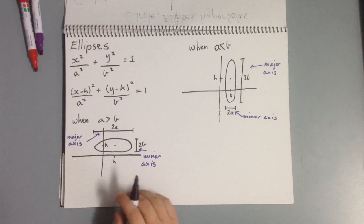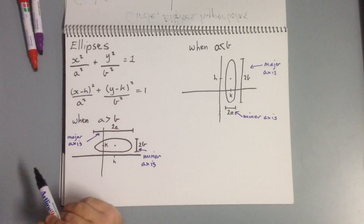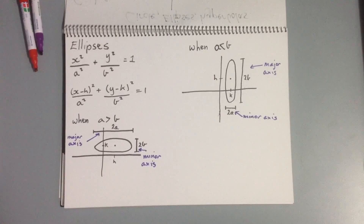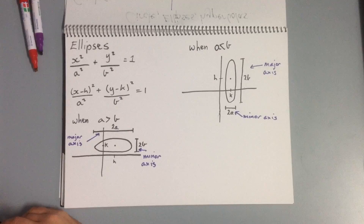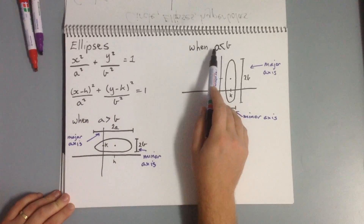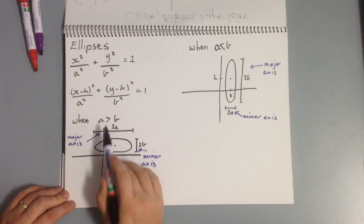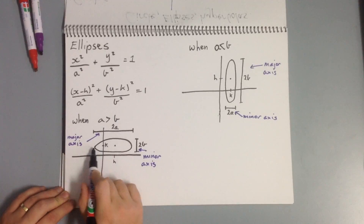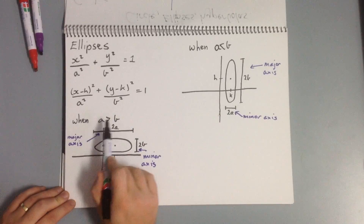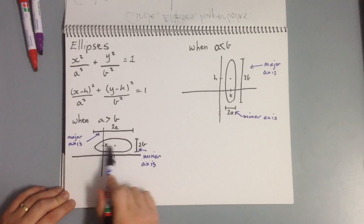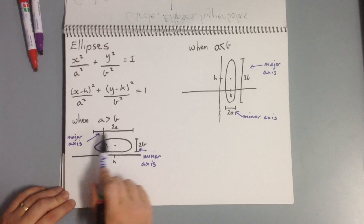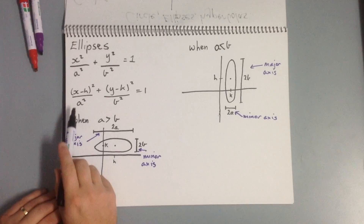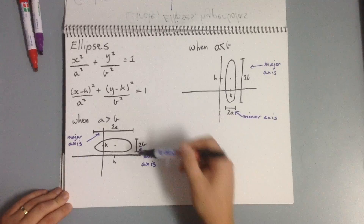When we look at our ellipses, they're a little bit different. We're talking about having x squared over a squared plus y squared over b squared equaling 1. But more often than not, we're going to be looking at translated examples: x minus h squared over a squared plus y minus k squared over b squared equals 1. We've got two cases: when a is bigger than b, our horizontal axis will be our major axis, with length two times a, and our vertical axis will be our minor axis with length two times b.